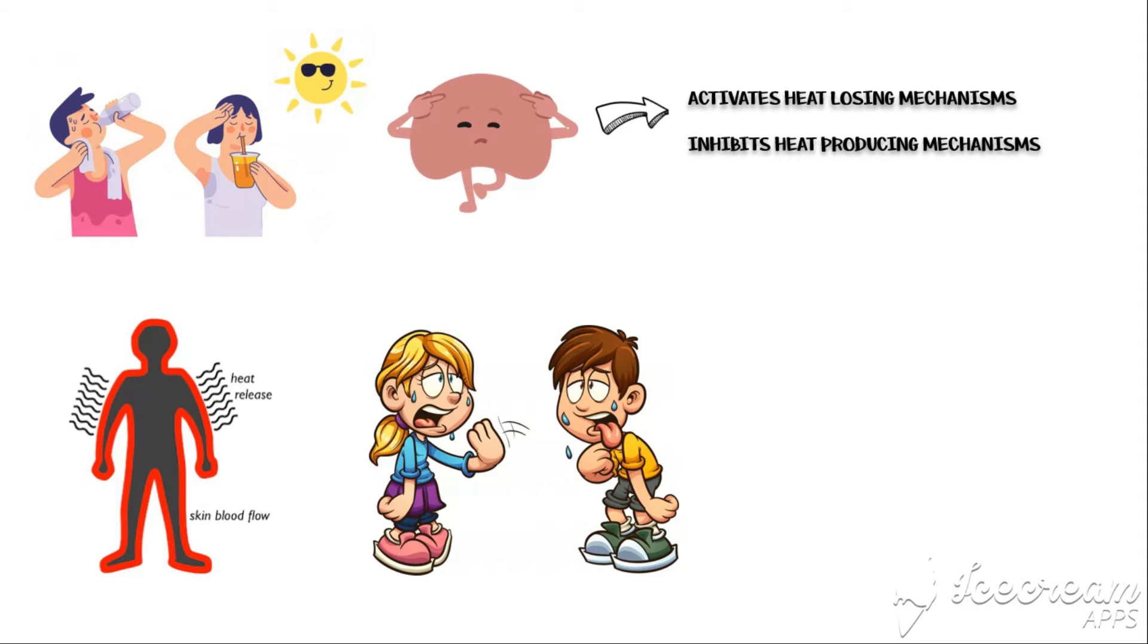To reduce the amount of heat produced in our body, the hypothalamus reduces the metabolic rate, so the cellular functioning will be slow. By these mechanisms, the hypothalamus brings back the body temperature down to the temperature set point, and then these mechanisms will be stopped.